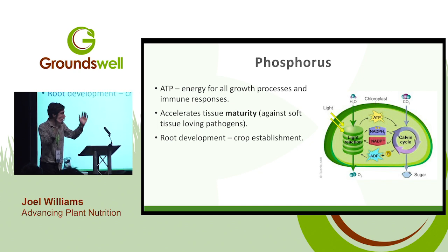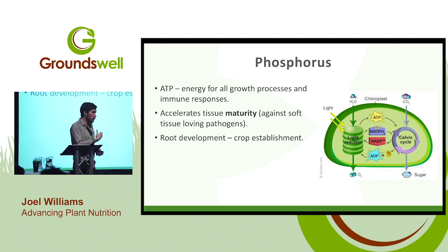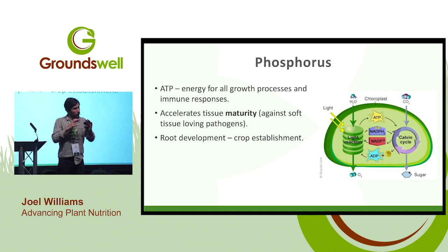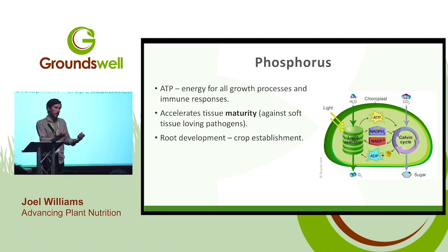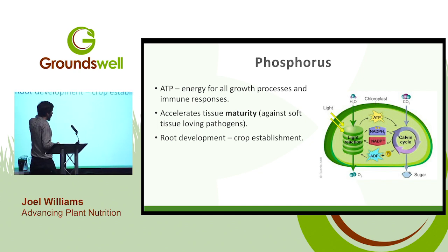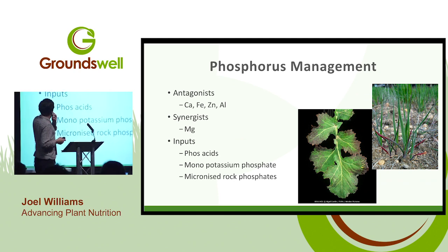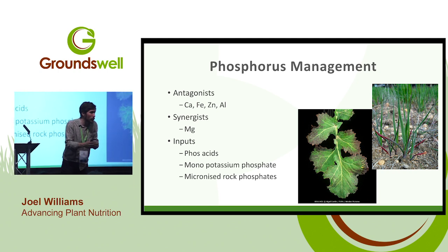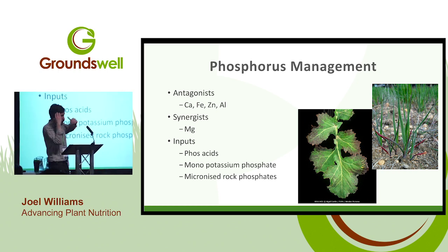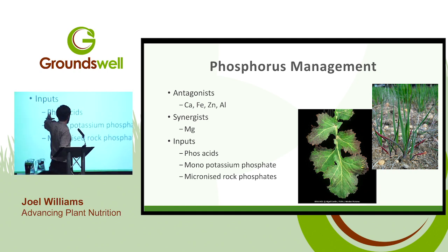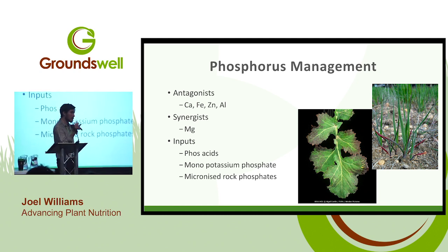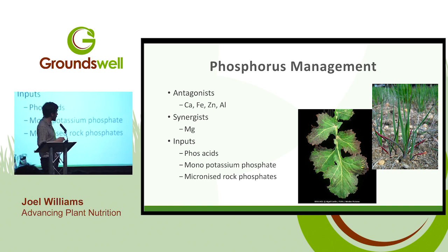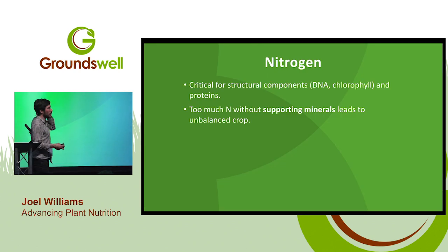Phosphorus, as mentioned, is ATP — the energy currency of the plant. Phosphorus also has a role in accelerating tissue maturity, which is important because young plant tissues are more susceptible to pest and disease. Phosphorus helps harden off those young tissues, helping them to mature and making the plant more resistant. Root development is also very important for crop establishment. Antagonists of phosphorus are calcium, iron, zinc, and aluminium — particularly those lock up with phosphorus forming insoluble unavailable compounds. Magnesium helps to improve phosphorus availability. From a foliar perspective, various phosphorous acids, MKP — monopotassium phosphate — gives a bit of potassium and phosphorus and really helps to drive photosynthesis.